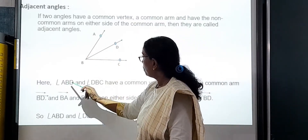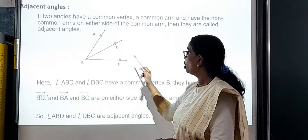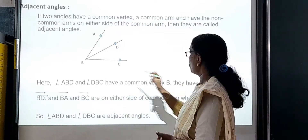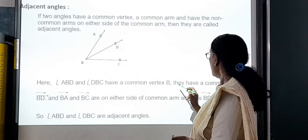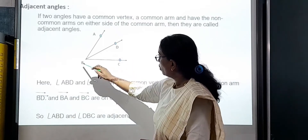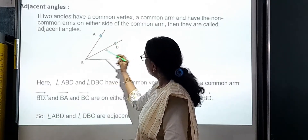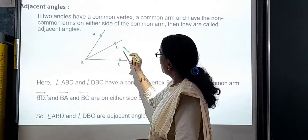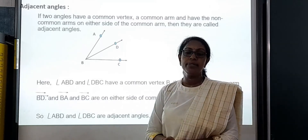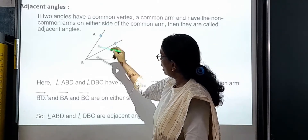Angle ABD and angle DBC have a common vertex B and a common arm BD. So angle ABD and angle DBC are adjacent angles.